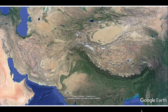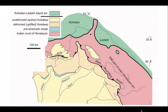Let's zoom in to the geological map. The syntaxes are commonly marked by these strange loops that you see on geological maps, and the particular loop we're interested in is picked out by the main mantle thrust.